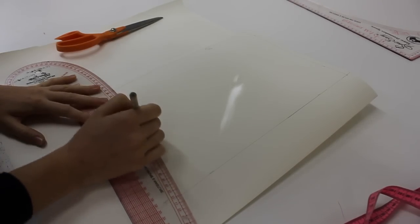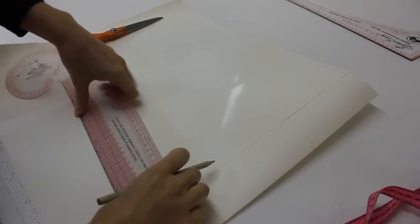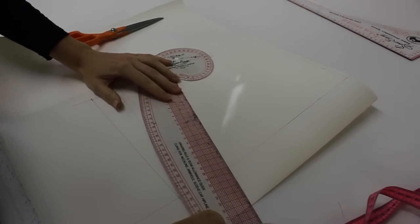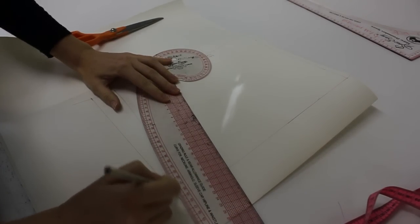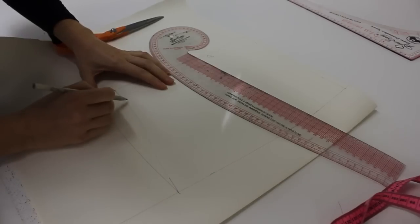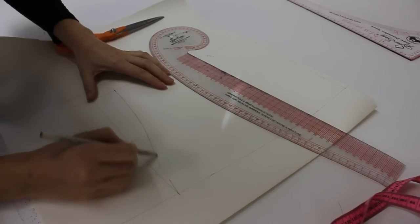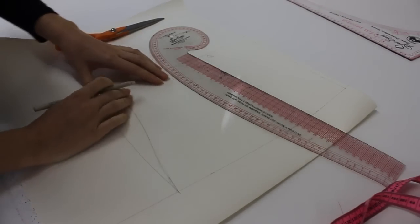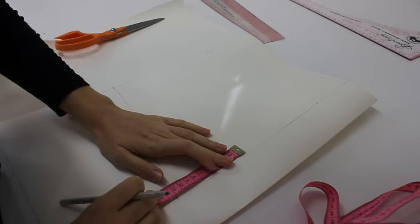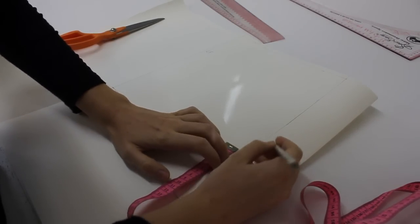But I'm now working on the hemline. So like I said, I decided to raise the centre front. So that was 28cm down from the waist and then the side seam was 32cm down from the waist. So as you can see, I'm using my French curve here and I'm just creating a gradiated line, a smooth curve for the hemline.